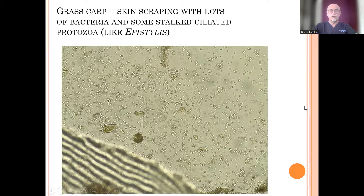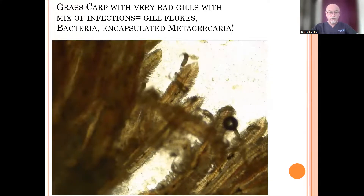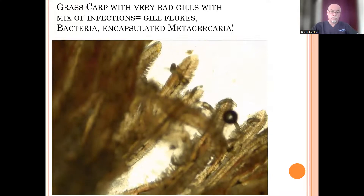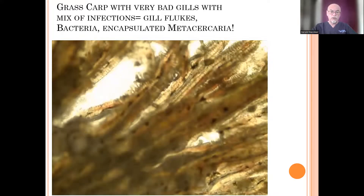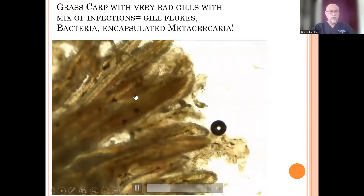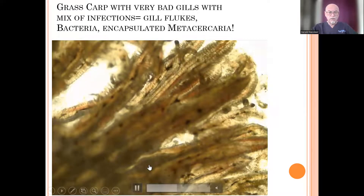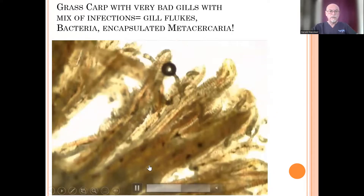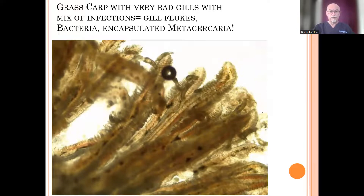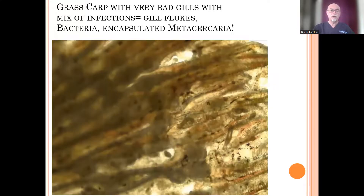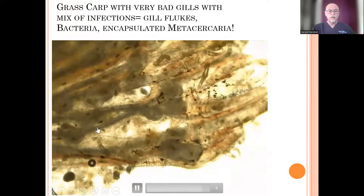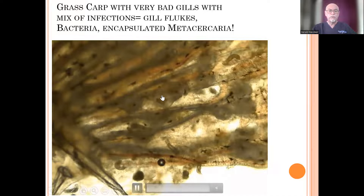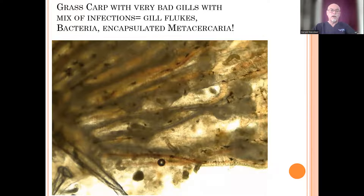But what we found else, which was very serious, were gill flukes — massive gill flukes. Of course, secondary bacterial infections. And look here — in the gills, also inside the gills, there are encapsulated metacercariae with worm larvae from the digenetic trematodes. Look, all worm larvae deforming the gills — very bad deformation of the gills.